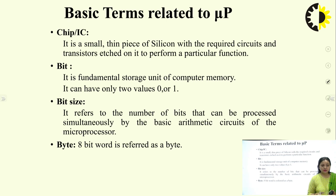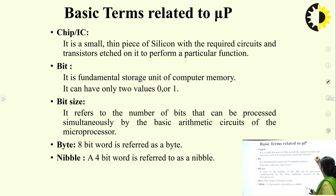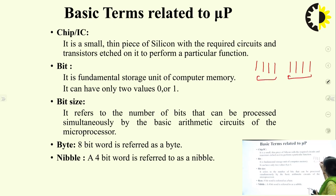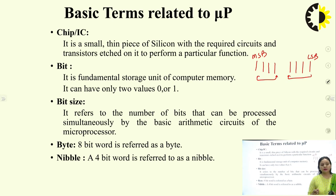A byte is a combination of 8 bits. A nibble is a combination of 4 bits. In an 8-bit data word, if you pair them into groups of 4 bits each, the group starting from the LSB side is called the lower nibble and the upper group is the higher nibble. So in an 8-bit word you can have two nibbles: a lower nibble and a higher nibble.